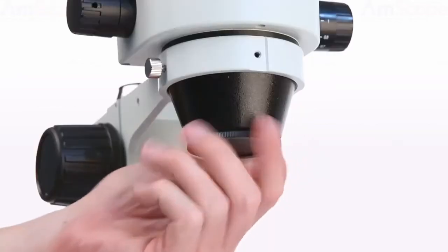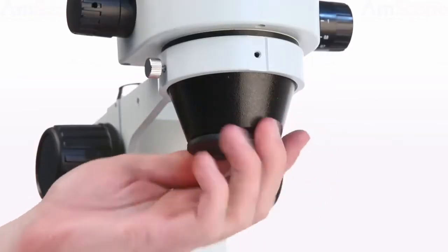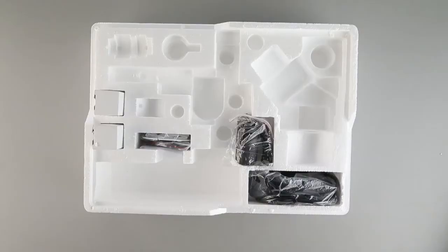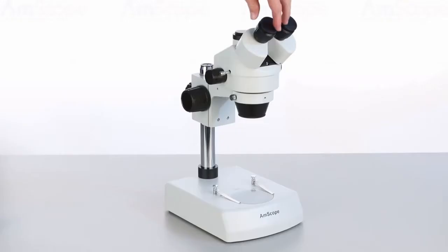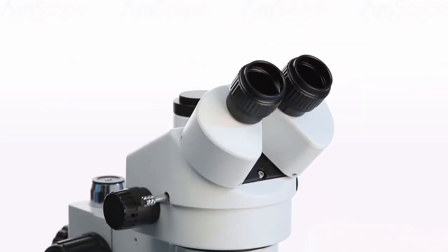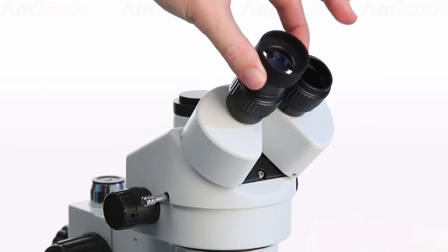Next we'll unscrew the lens cap to reveal the lenses. Now we'll move on to the eyepieces. Start by removing the dust caps on the eyepiece ports. Next, slip in each eyepiece.